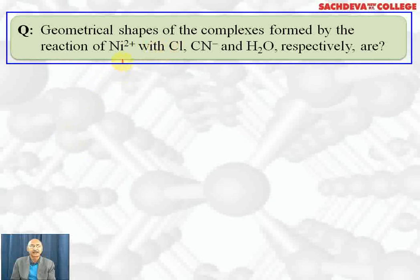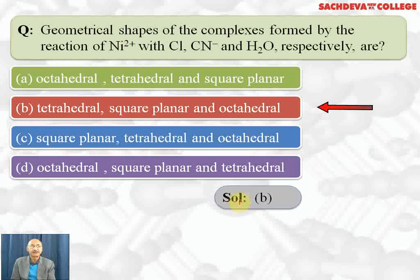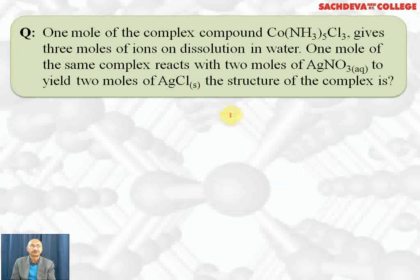The geometrical shapes of complexes formed by nickel ions with Cl⁻, CN⁻, and H2O respectively: the correct answer is B. With chloride ion, nickel forms a tetrahedral complex (sp³ hybridization). With cyanide ion, it forms a square planar complex (dsp² hybridization). With water (a weak field ligand), it forms an octahedral complex (sp³d² hybridization). The octahedral water complex is also paramagnetic, confirming B as the correct answer.